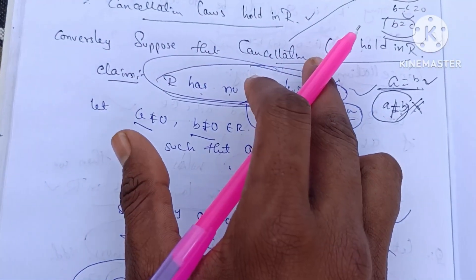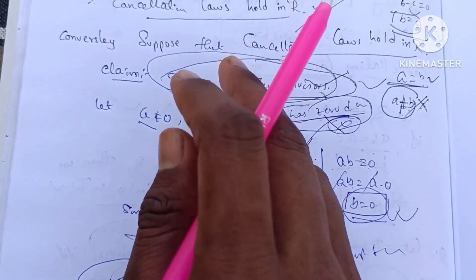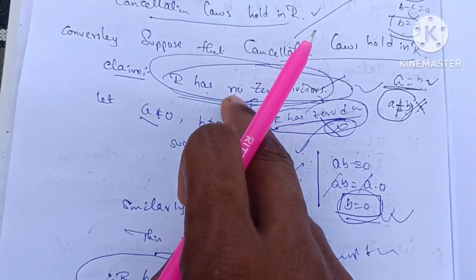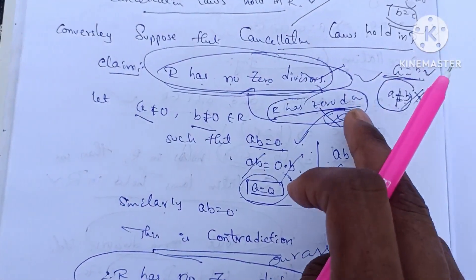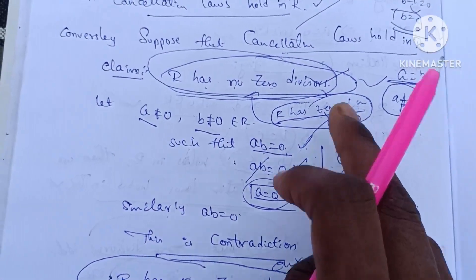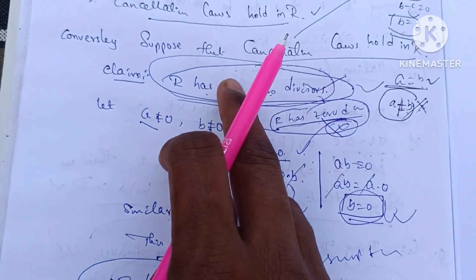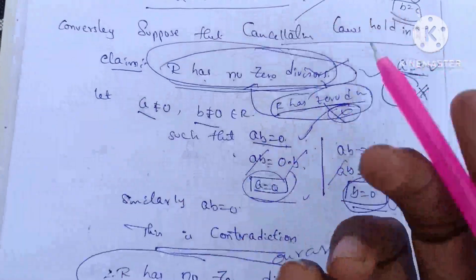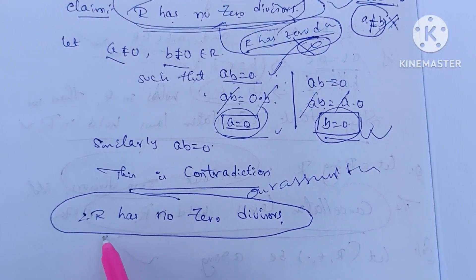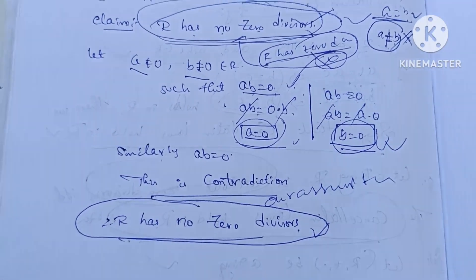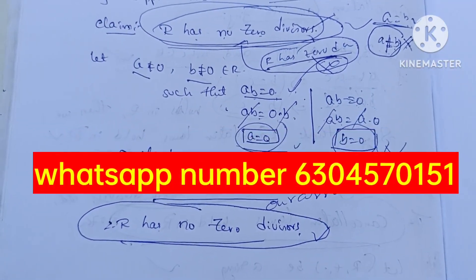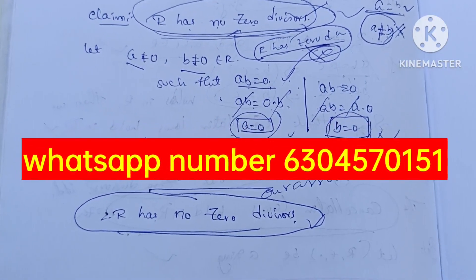R has no zero divisors — this is the right answer. Therefore R has no zero divisors. So this is the conclusion of the proof.